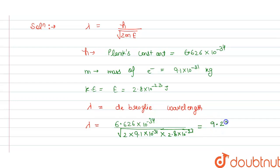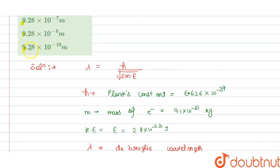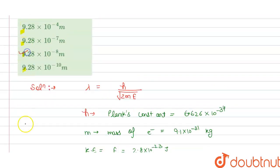This will become 9.28 into 10 power minus 8 meter. And this is the answer for the question. Now we check which option is correct here. Option C is correct. Thank you.